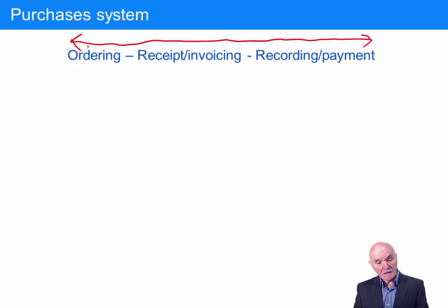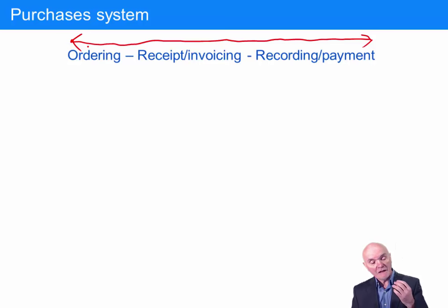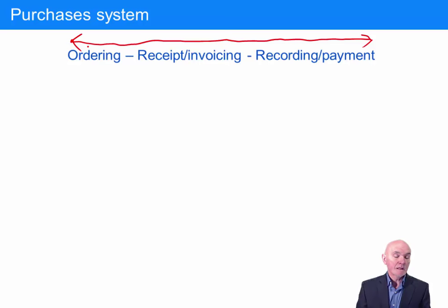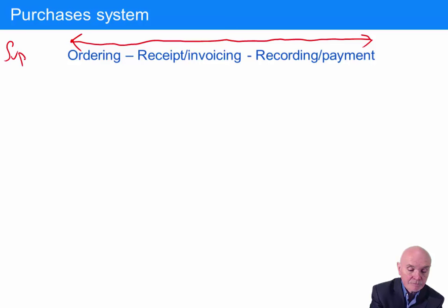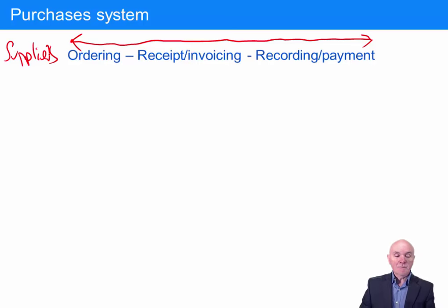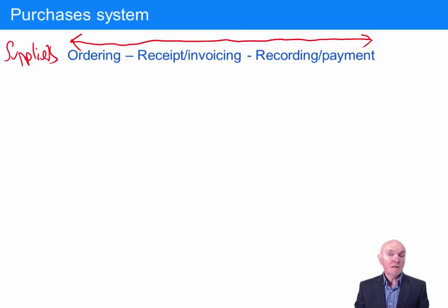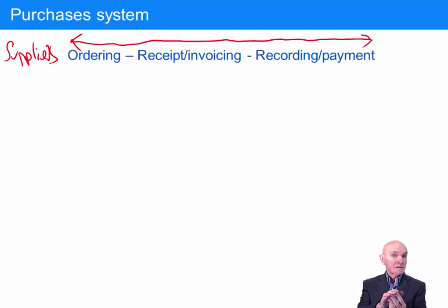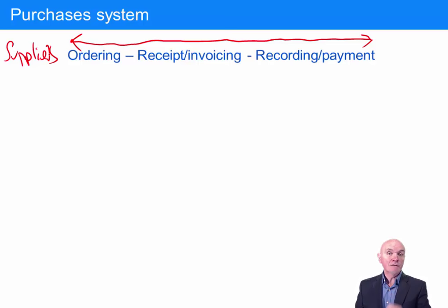Though this may appear to be the complete purchases system, you could argue it actually starts slightly earlier. Before placing an order, someone should have decided who our suppliers are going to be. You need suppliers who will supply goods of the right quality, when you need them, and who will also be competitive. Sometimes the internal control system says you must get a quotation from three suppliers. In other situations, the control says we've negotiated a really good discount from a particular supplier and all supplies of that raw material will come from them.